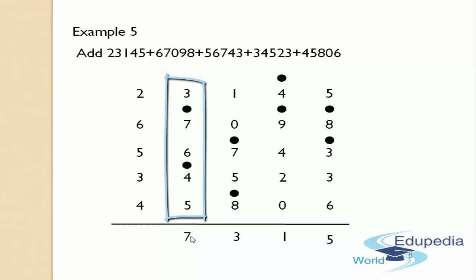Now count the number of dots in the thousands column — there are only 2 dots. This count should be added to the next column, that is the ten-thousands column. The first digit is 4, so 2 plus 4 is 6.